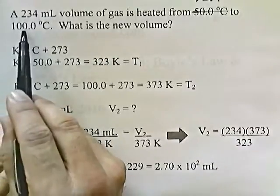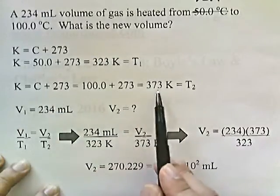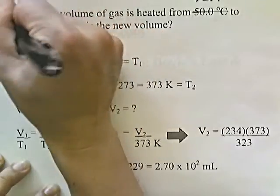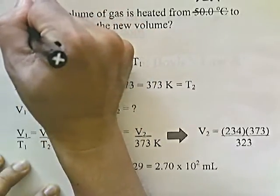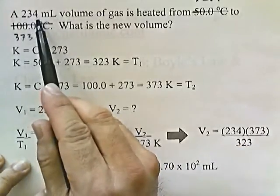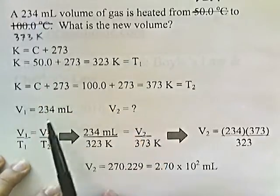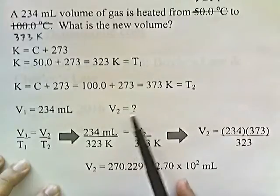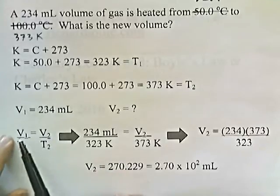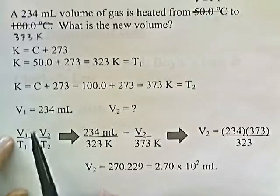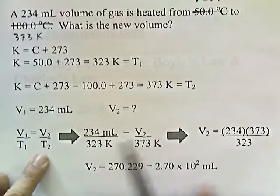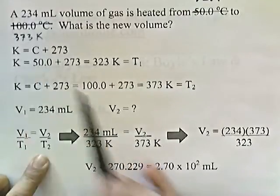And 100 degrees Celsius plus 273 is 373 Kelvin — that's the new temperature. So applying the formula V1 over T1 equals V2 over T2: the initial volume is 234, the initial temperature is 323 Kelvin, we're solving for the new volume V2, and the new temperature is 373 Kelvin.